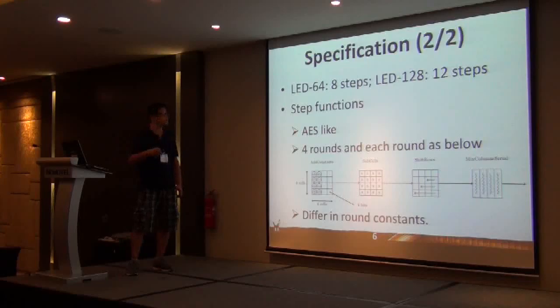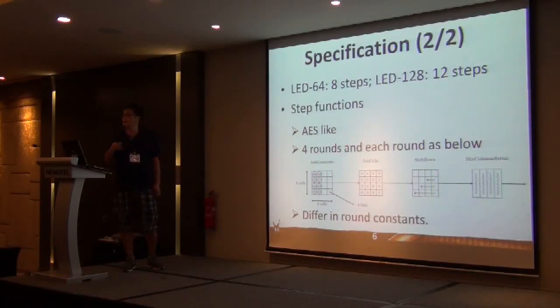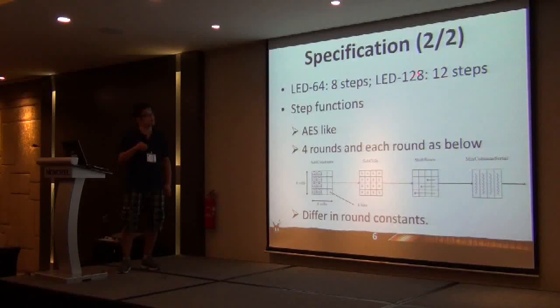Let's look at the step function. It's AES-like. Each step function has four rounds, and each round is similar to an AES round function. First, you add the round constant, then include the SubCell, ShiftRow, and MixColumn. Each step function also does the round function. LED-64 has eight steps, and the 128-bit version has 12 steps in total.